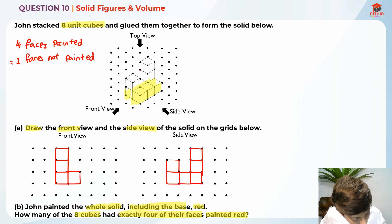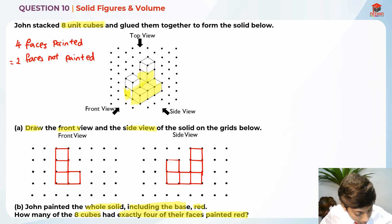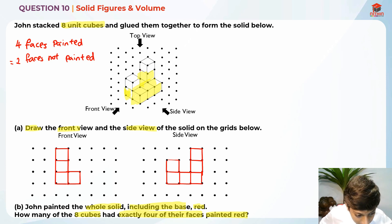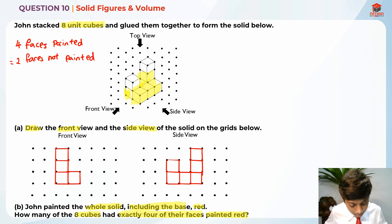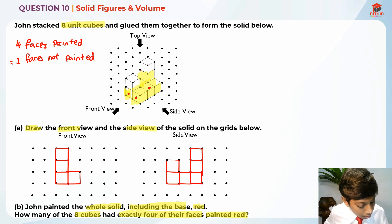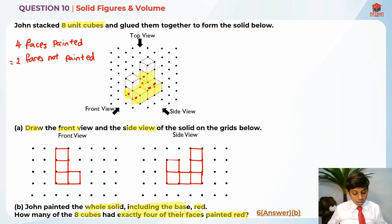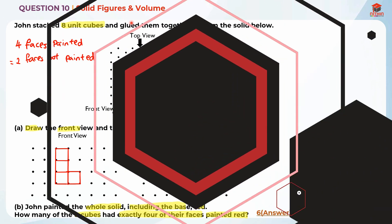So there are basically these three, this one, and these two — basically six cubes with exactly four faces painted. The answer is six. Let's just count to be sure: one, two, three, four, five, and six. So the answer is six for this question part B. I hope you all understand my explanation for question 10. Thank you and bye-bye, I'll see you in my next video.